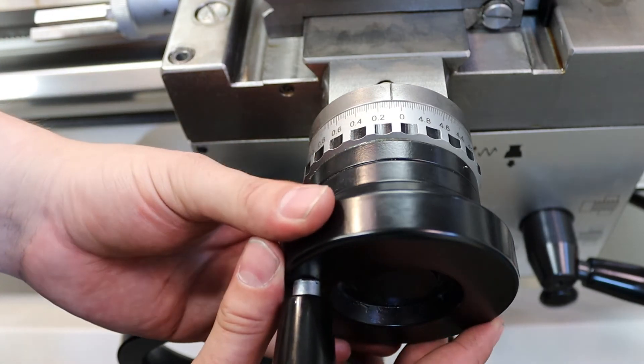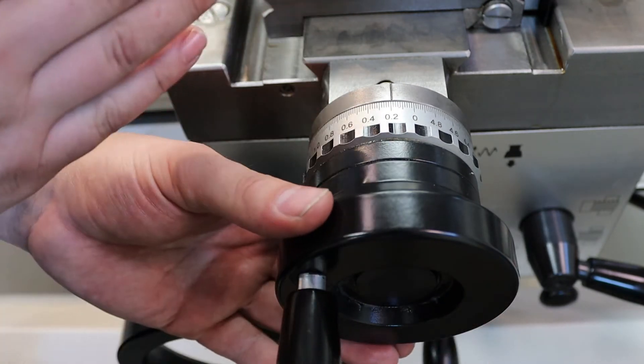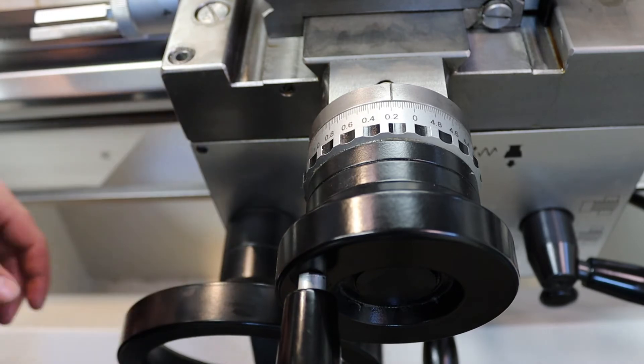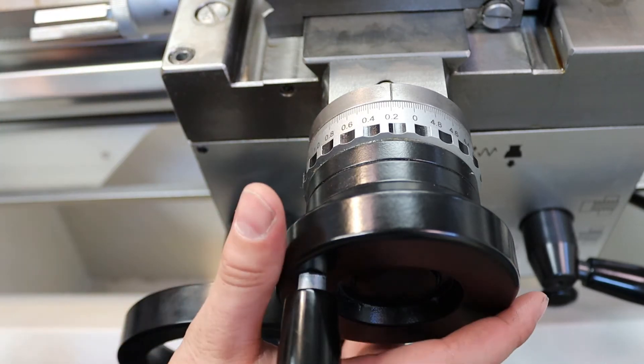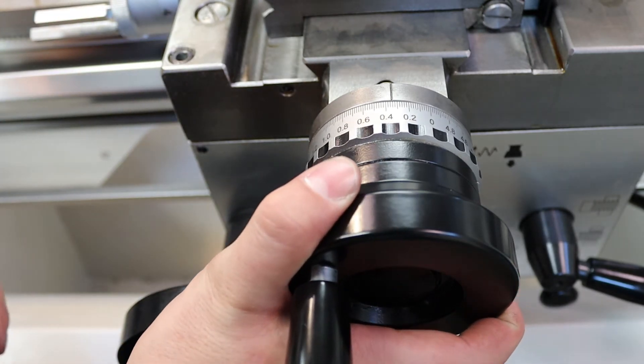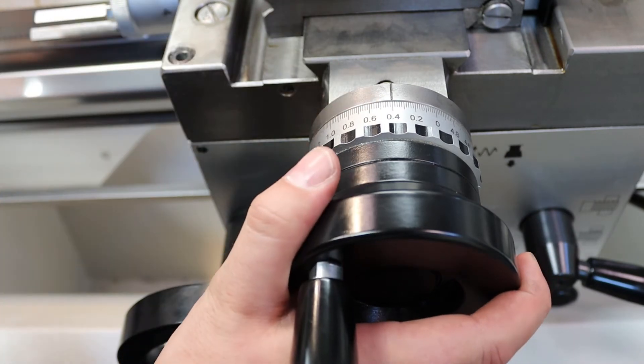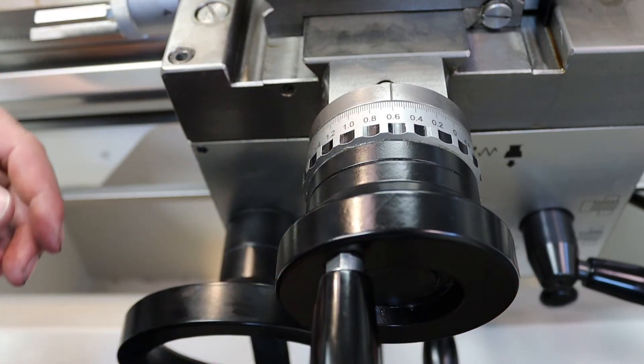So if I move to point two, that means I've moved point two millimeter. So in total, we've moved five point two millimeters now. And as we progress around, we can use each indentation to keep track of how far we're moving into the material.